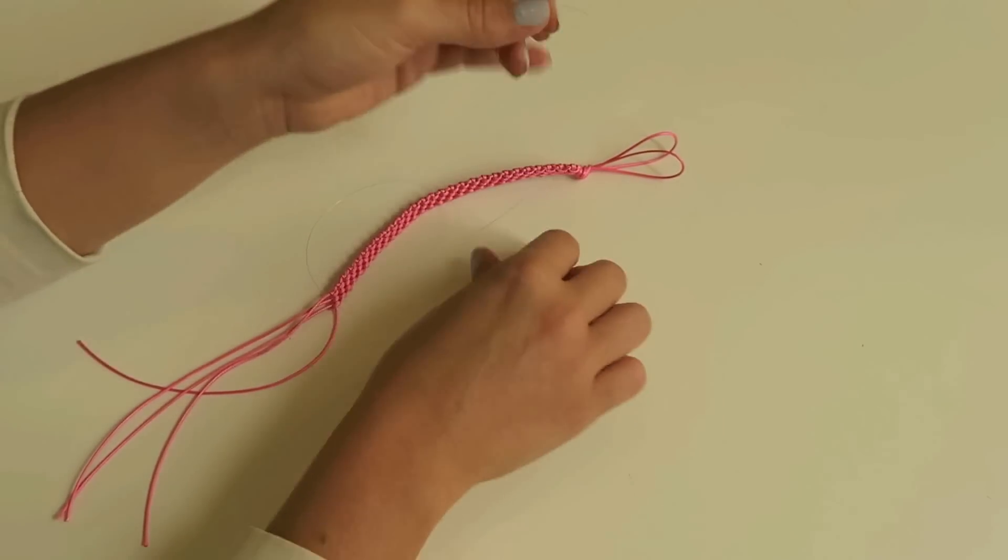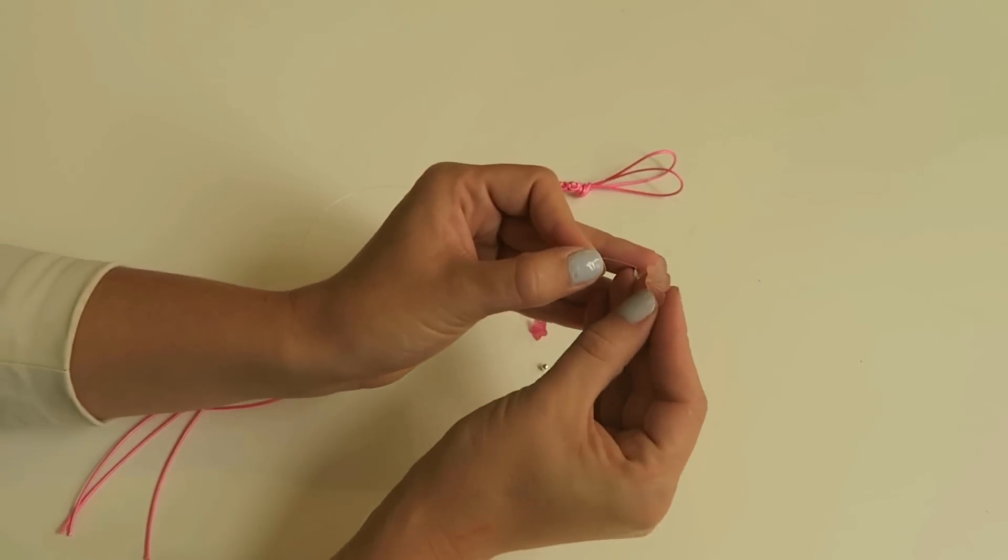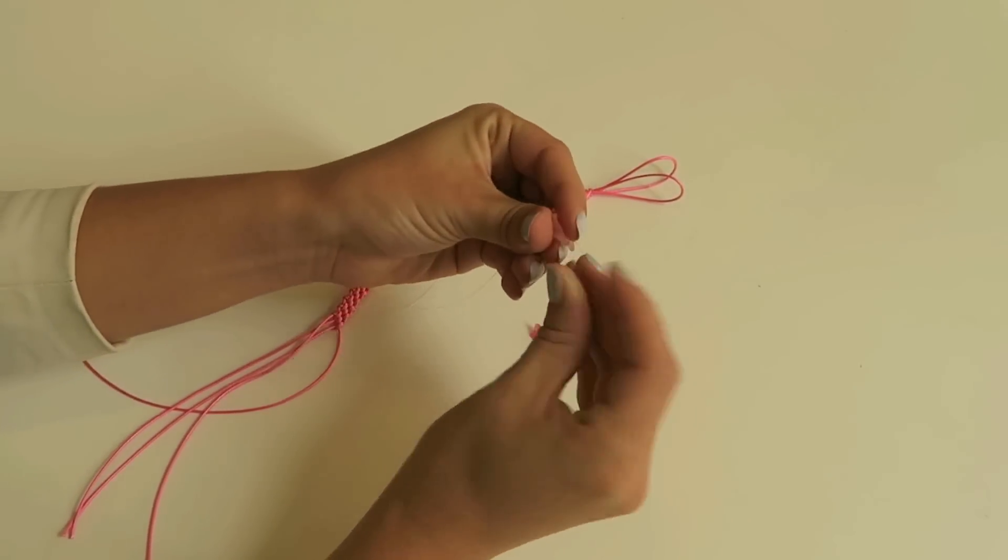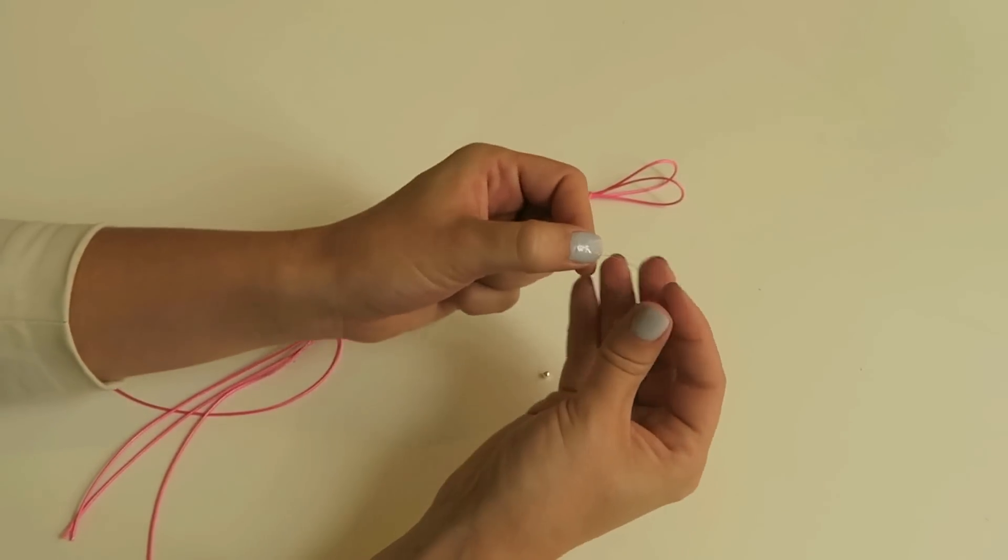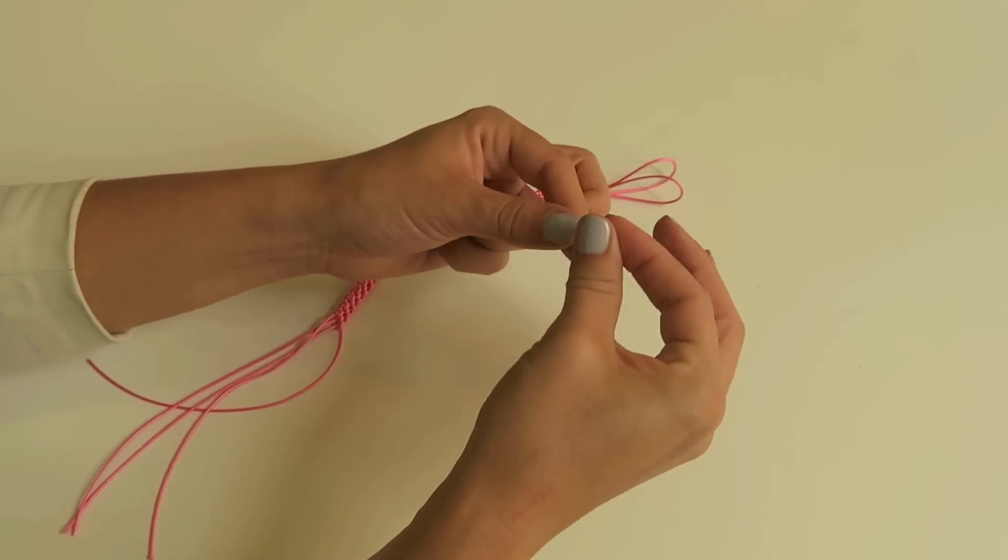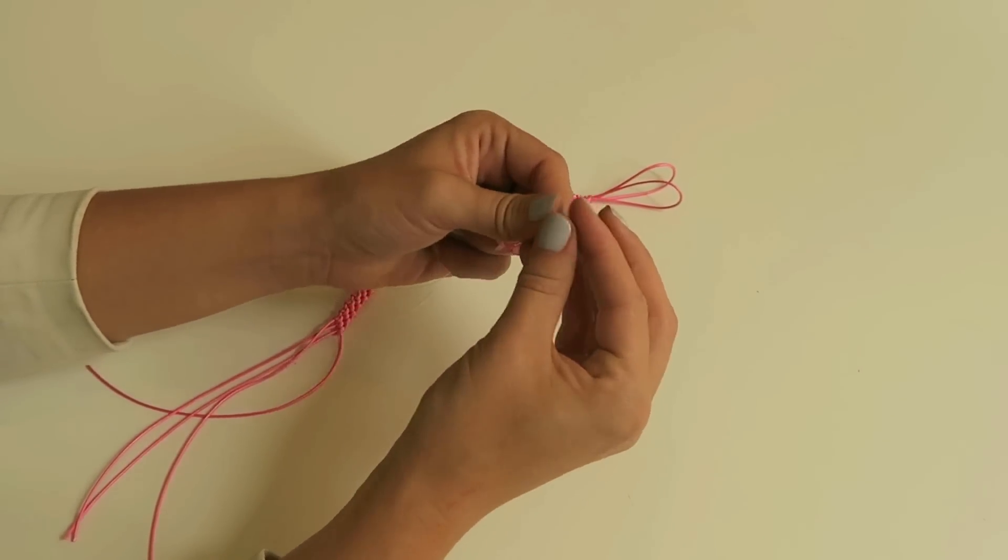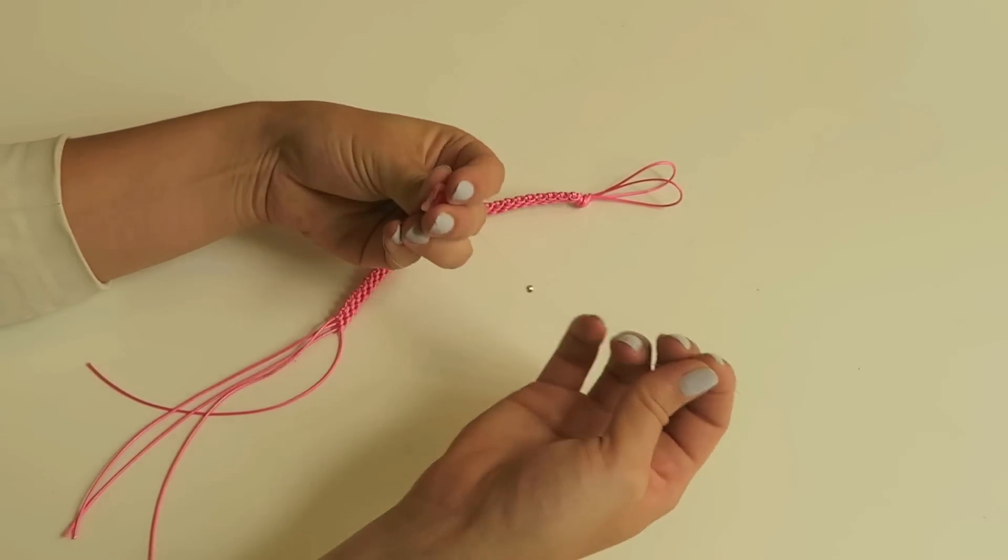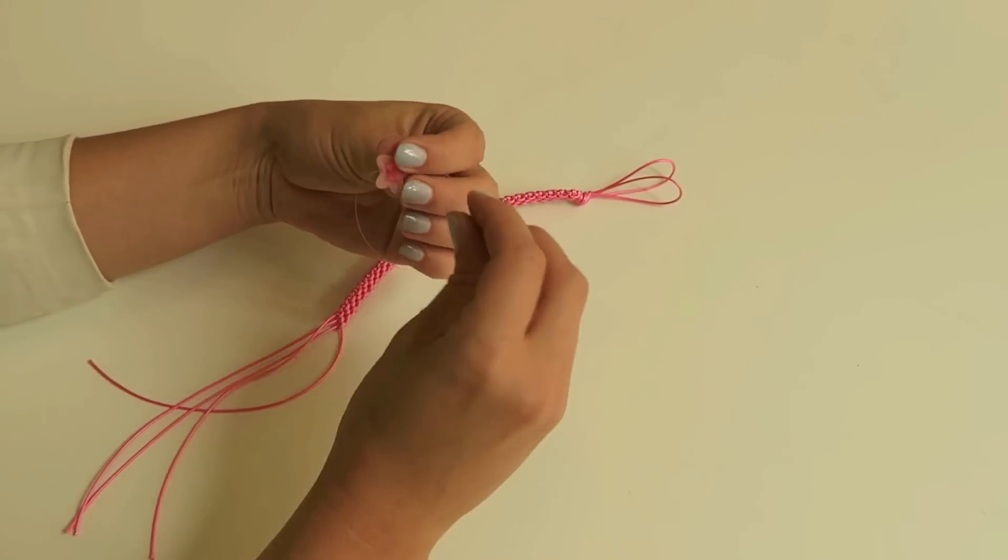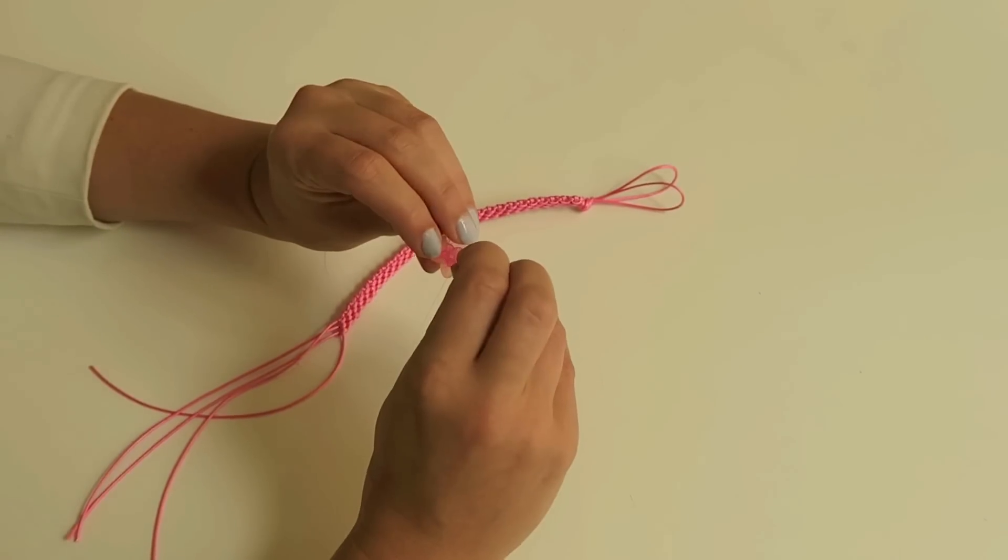Pull your thread halfway. Then first put on the larger flower and then the smaller flower. And then you're gonna take your spacer beads. And then you're gonna put your thread back, but not through the spacer beads. You're just gonna put it back through the flowers.